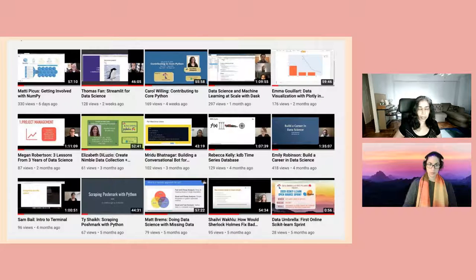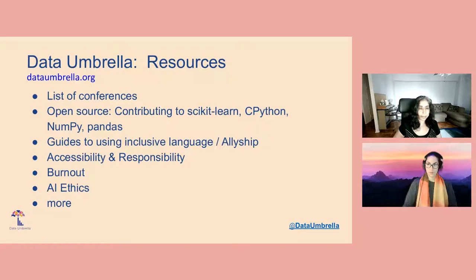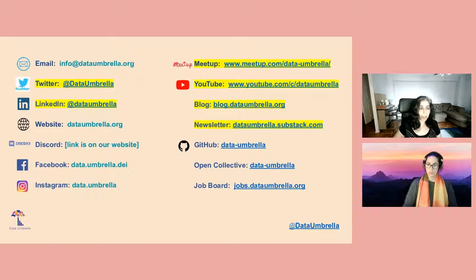On our website, we have a lot of resources related to using inclusive language, allyship, accessibility, responsibility, and a lot of other things — we encourage you to check them out. We are on all social media platforms as Data Umbrella. Meetup is the place to go to find out about upcoming events, YouTube is where all of our recordings are placed. We also have a blog and a newsletter on Substack — a once-a-month newsletter — and we're also active on Twitter and LinkedIn.